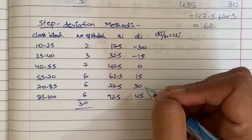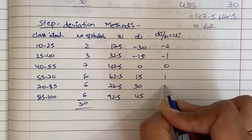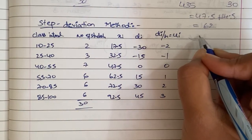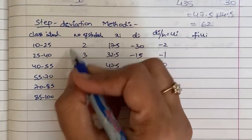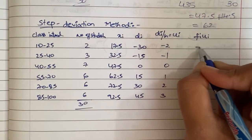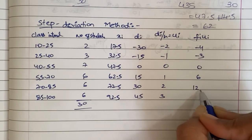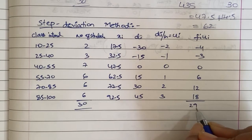Next, here we have to take fi into ui. So this term into frequency term. So minus 2 into 2 is minus 4, minus 3, 0, 6, 12, 18. And the total, 29.